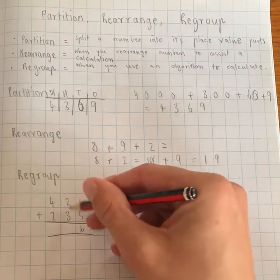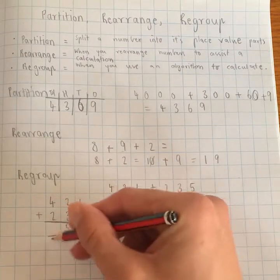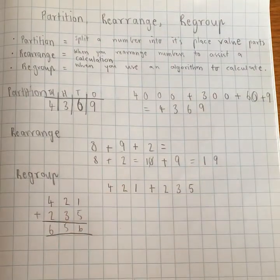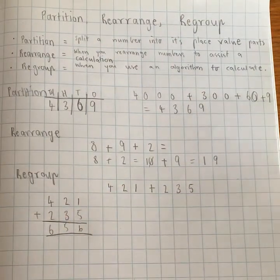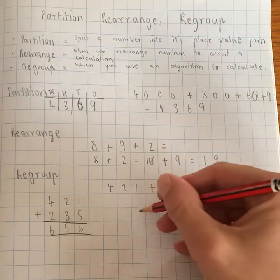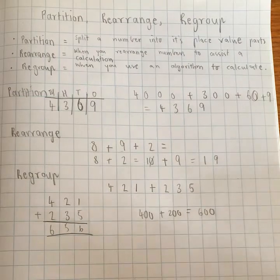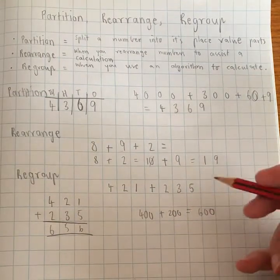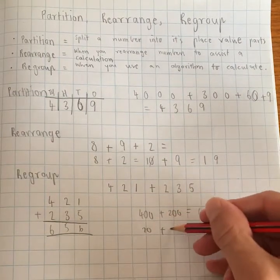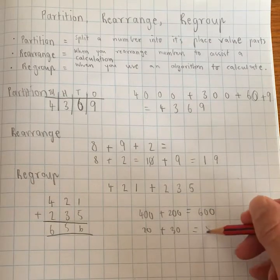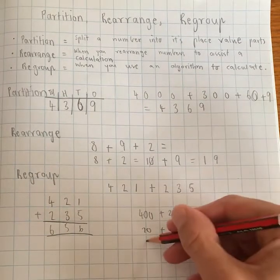Okay, I can do this when I write it down. 1 and 5 is 6. 2 and 3 is 5. 4 and 2 is 6. Oh, 656. Now what I might do in my head is I might add the hundreds. All right, 400 plus 200 equals 600. I might add the tens then. 20 plus 30 equals 50.